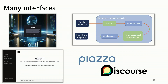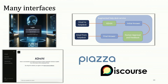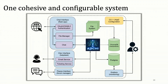We have many interfaces. Our main interface on the left is a chatbot that you can put behind a login system. We also have an augmented help desk: an email gets sent in, Archie drafts an initial response that gets curated with humans and then output as an email from the help desk. We also have Piazza and Discourse forum interfaces widely used in classes. We combine all these into one cohesive and configurable system with the Archie core in the middle, and we're constantly building more interfaces.